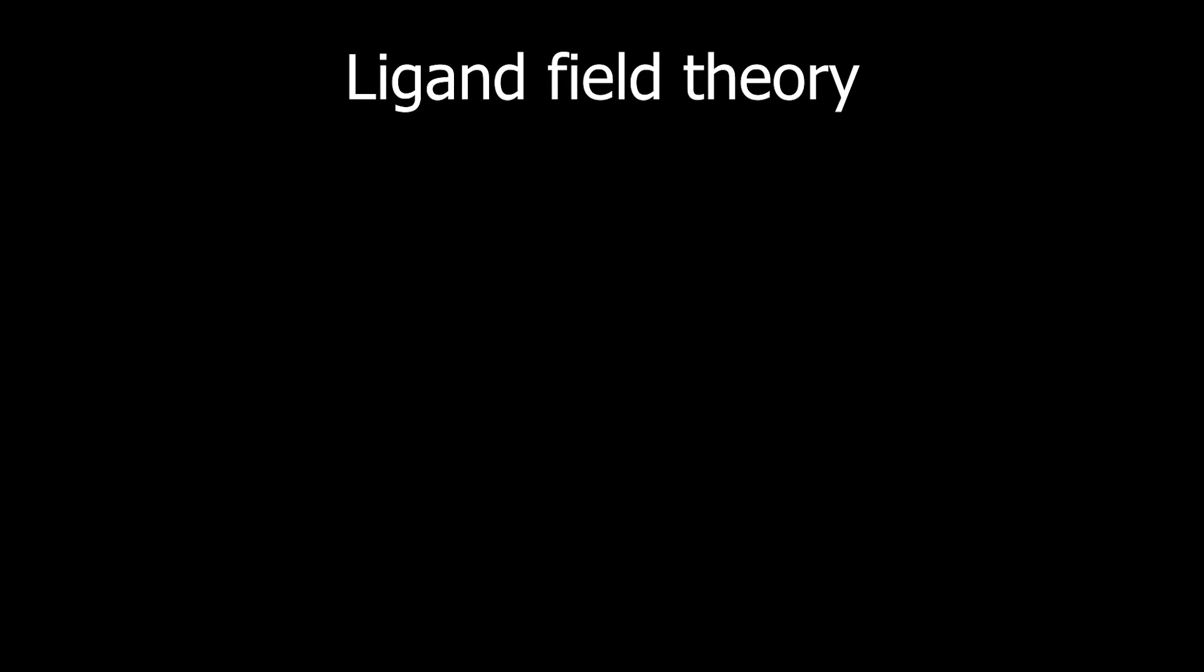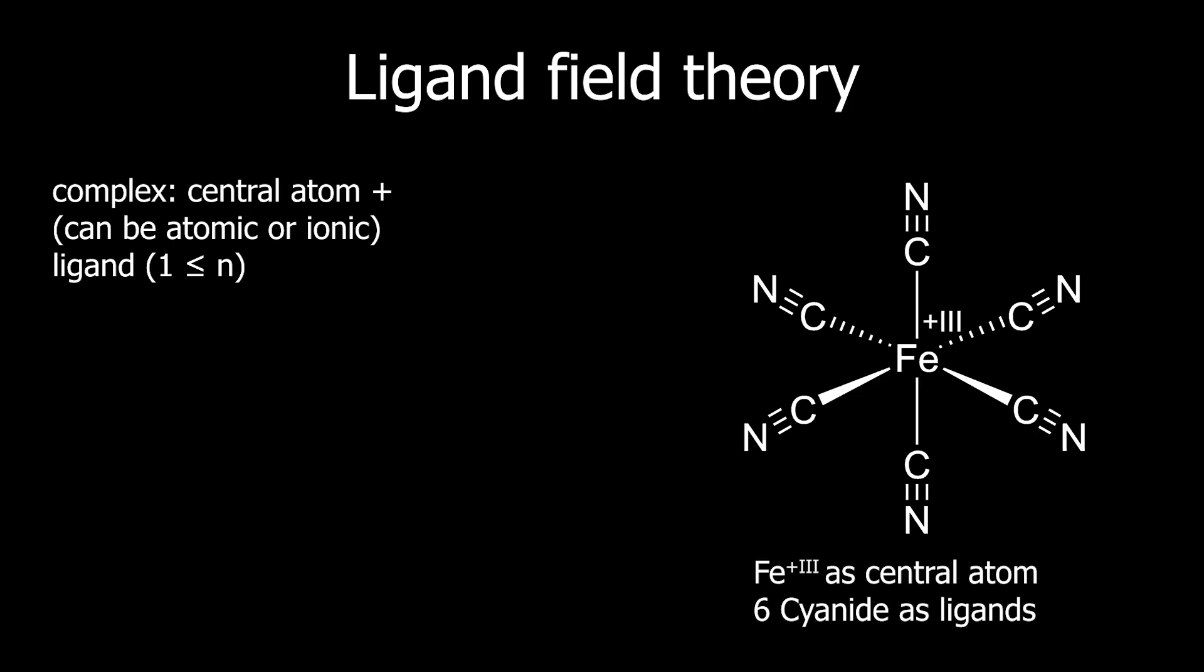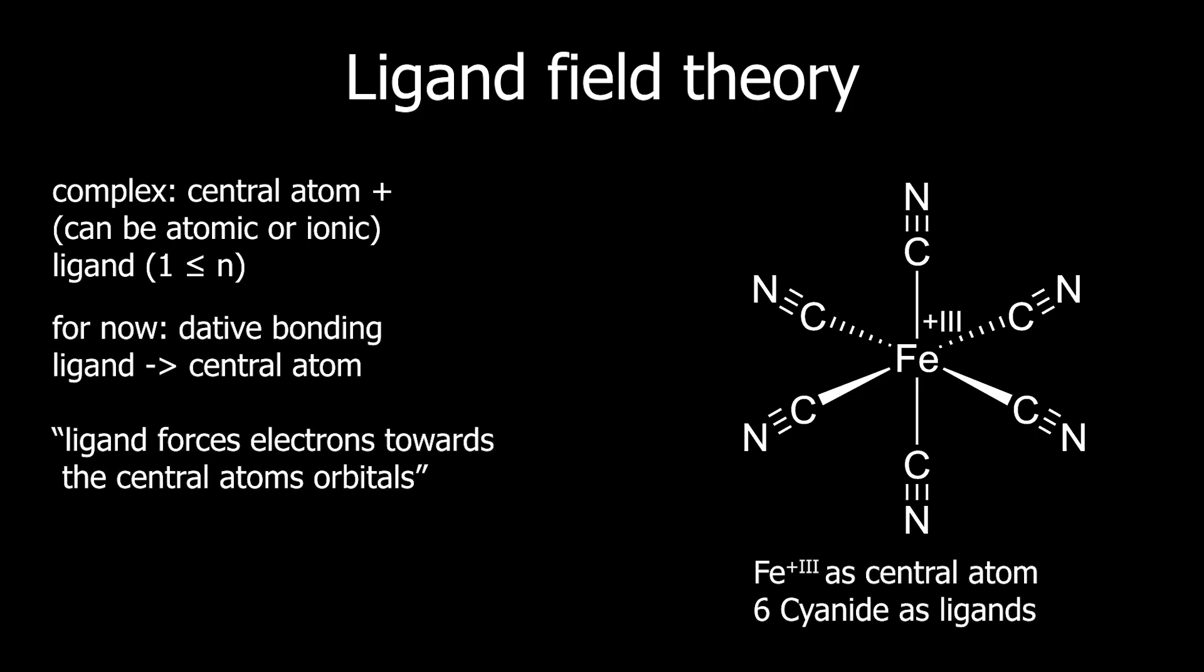Let's take a closer look at the ligand field. Since we're dealing with complexes, here's a quick summary. A complex consists of a central atom and ligands. Ligands donate an electron pair or electron density to the central atom. The central atom itself has electrons, which are described by orbitals.